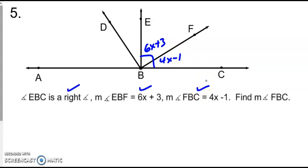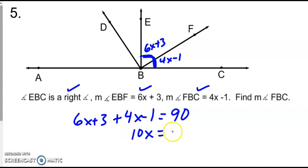Again, let's pull an algebraic equation off of here. So I see that I have a right angle, and these two angles, EBF and FBC, make up this right angle. So they would add to 90 degrees. So 6X plus 3, 4X minus 1 equals 90. Now I have an equation I can solve. So I'll get 10X equals 88, and then if we divide, we get that to be 8.8.